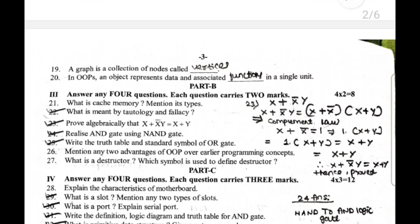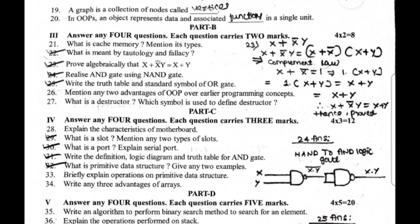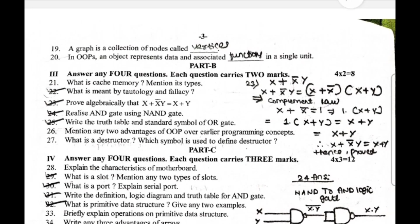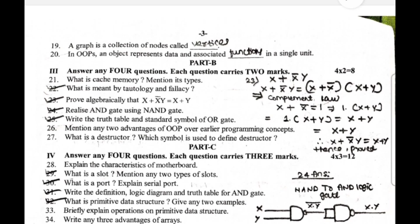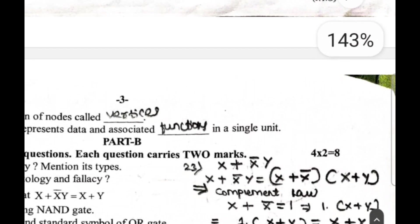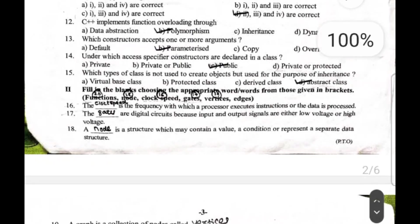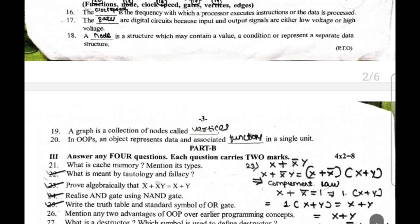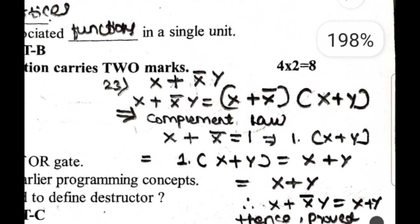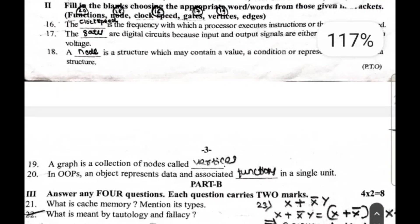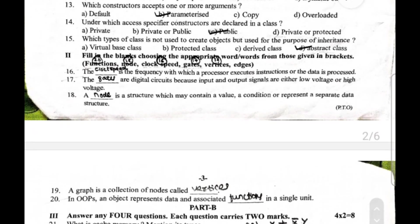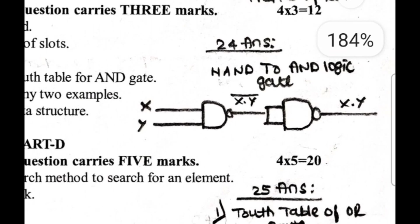Part B: answer any four questions, each question carries two marks. 22nd question: what is meant by tautology and fallacy? If the result of any logical statement or expression is always true or one, it is called tautology, whereas if the result is always false or zero, it is called fallacy. 23rd question: prove algebraically that X plus X bar Y equals X plus Y. You have to use complementary law. 24th question: realize AND gate using NAND gate. 25th question: write truth table and symbol of OR gate. This is the truth table and the logical gate of OR.